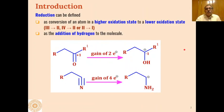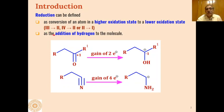Reduction can be defined as the conversion of an atom in a higher oxidation state to a lower oxidation state. For example, if a reactant has oxidation state 3 it may be converted into 2, or if it has 4 it may be converted into 2, or from 2 to 1. Whenever any atom changes from a higher to a lower oxidation state in a given reaction, that reaction is defined as reduction.